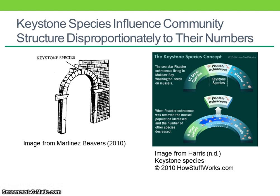Keystone species influence community structure disproportionately to their numbers. As described by Martinez Beavers, 2010, quote: a keystone is the centerpiece of an archway. Its trapezoidal shape allows the whole frame to stand and keeps both sides balanced. A keystone species provides habitat or food for many other species. It allows a complex community to exist. If the keystone species is removed, the ecosystem will collapse, just like taking the keystone out of an archway. Beavers are considered a keystone species because their dams create a kind of neighborhood for other wildlife, end quote. A keystone species has a disproportionate impact on the community relative to its abundance.